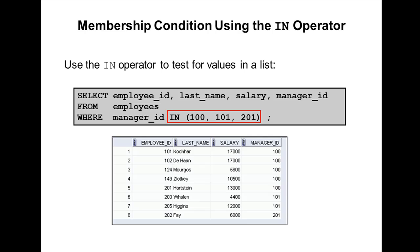This query is retrieving records whose manager id is in 100, 101, or 201. If it is equal to 100, display it; if it is 101, display it; if it is 201, display it. Otherwise, don't display it. So this retrieves employees whose manager id is in 100, 101, 201.